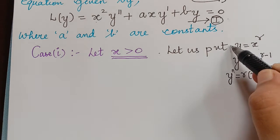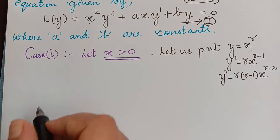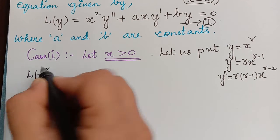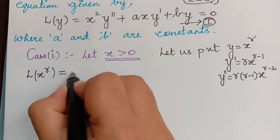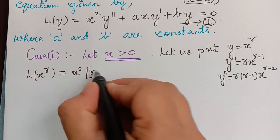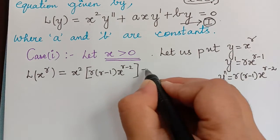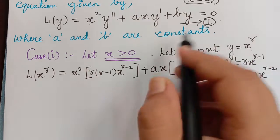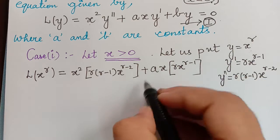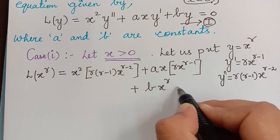We shall substitute all three into equation Roman numeral 1. So L of x to the power r turns out to be x squared multiplied with y double dash, that is r times r minus 1 times x to the power r minus 2, plus Ax multiplied with r times x to the power r minus 1, plus B times x to the power r, equal to 0.